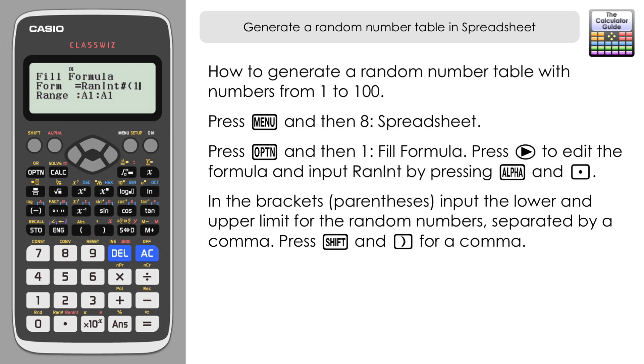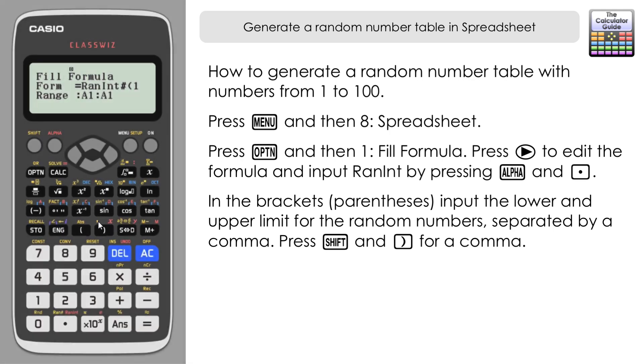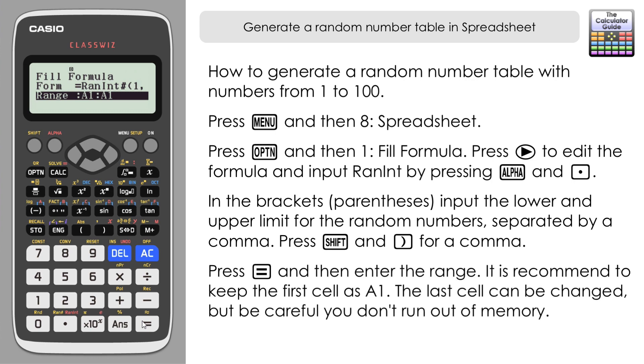Now I want to put the upper limit but I need to separate this using the comma. The comma is above the right bracket button, so you need to press Shift and then right bracket to get a comma. Then we put our upper limit, the highest number that we want to include in our random number table. In this first one I'm going to do 100 and close brackets.